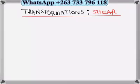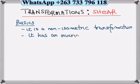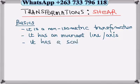We are going to look at shear transformation. Let's look at the basics of shear transformation. This is one of the non-isometric transformations which includes enlargement, stretch, and shear. Then it has an invariant line or axis, so the transformation can be parallel to the y-axis or to the x-axis. Then lastly it has a scale factor, like all the non-isometric transformations.